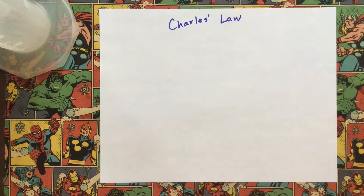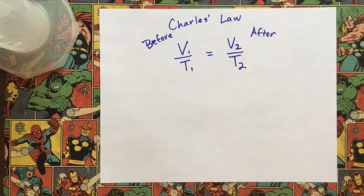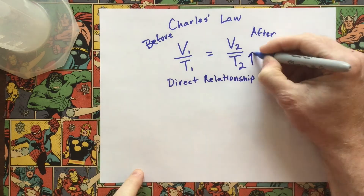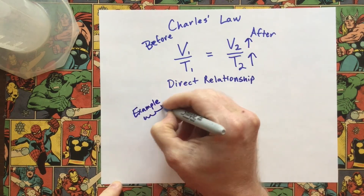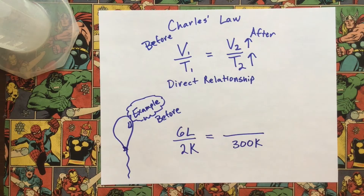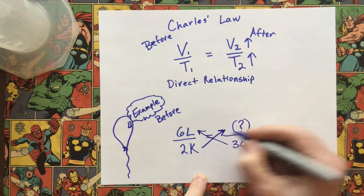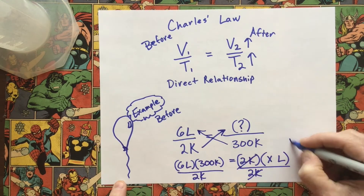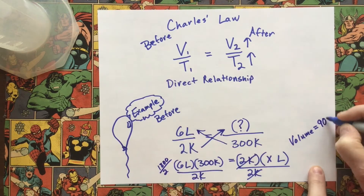Next, let's consider Charles's Law. Here we're looking at the volume and temperature of a gas before and how they respond to changes. This is a direct relationship — as one goes up, the other goes up and vice versa. Since we're dealing with temperature in a ratio situation, zero needs to mean zero, which is why we use the Kelvin scale. For example, a balloon at six liters and two Kelvin — which is ridiculously cold, almost absolute zero — if heated up to 300 Kelvin, cross-multiplying gives us a new volume of 900 liters, which is ginormous.